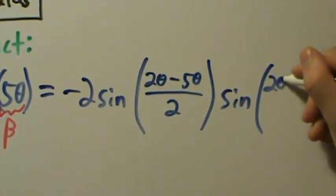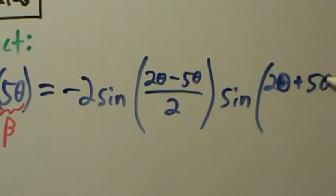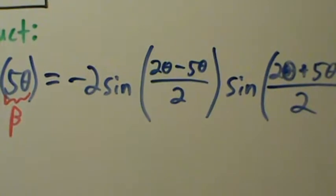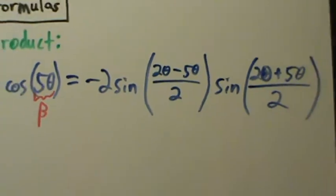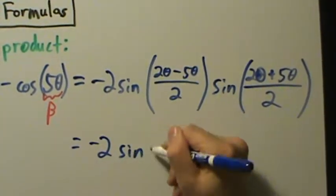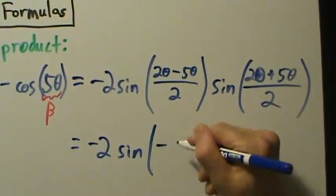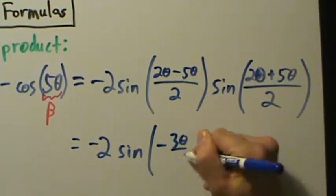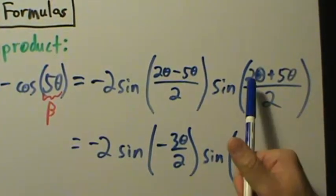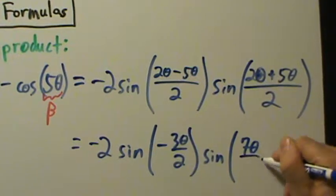So that's two theta plus five theta all over two. When we simplify: two theta minus five theta is negative three theta, giving us negative three theta over two. And two theta plus five theta is seven theta, so we have seven theta over two.